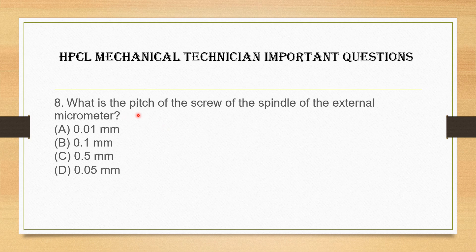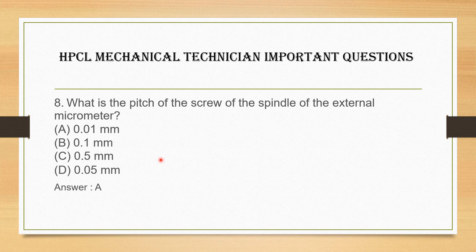Next question: what is the pitch of the screw of the spindle of an external micrometer? For an external micrometer, the pitch of the spindle screw — the options include 0.1 mm and 0.5 mm. The answer is 0.5 mm. The pitch of the screw of the spindle of the external micrometer is 0.5 mm.